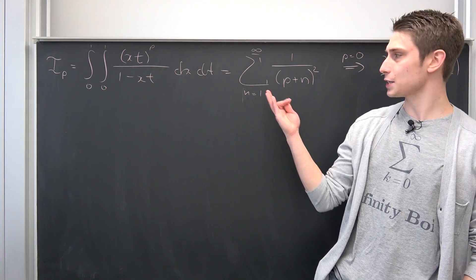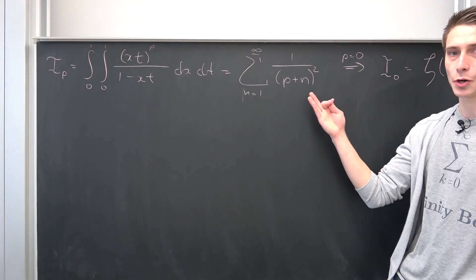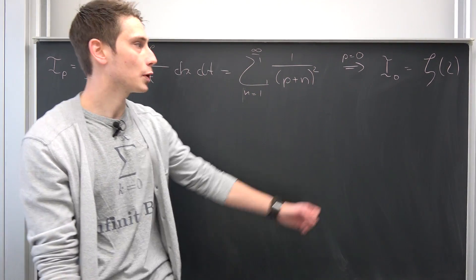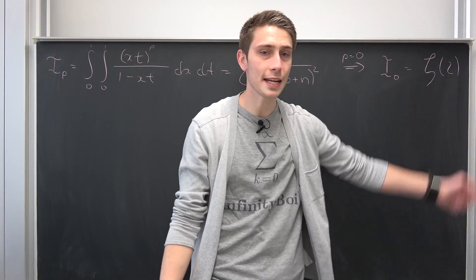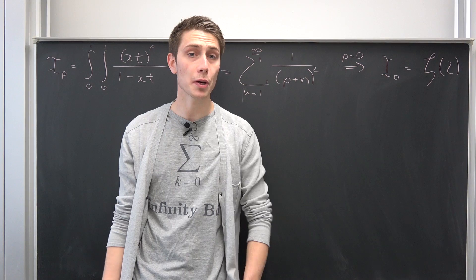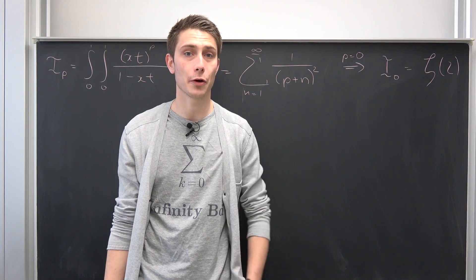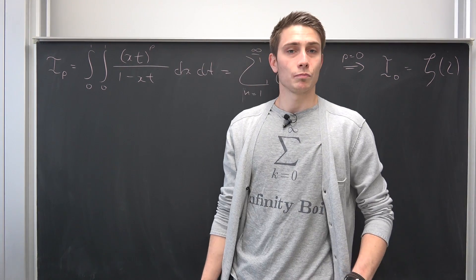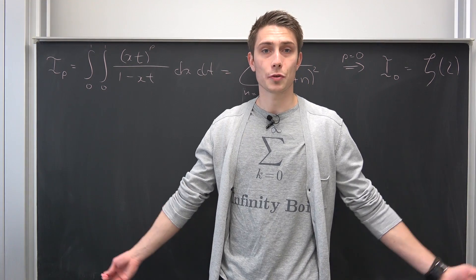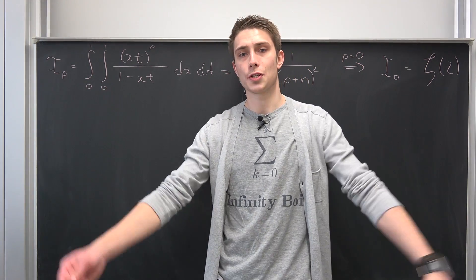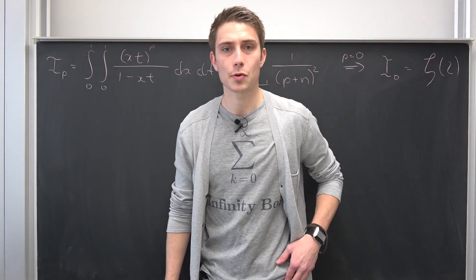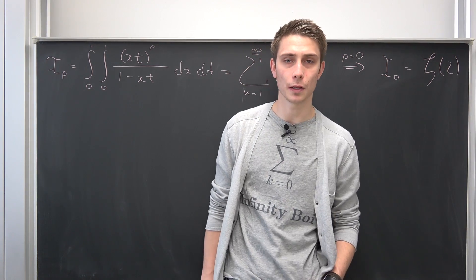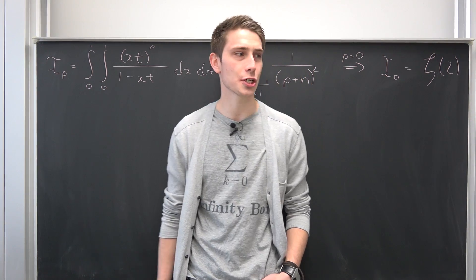Remember this huge expression from last time — when we let p be equal to zero, we get zeta of two. Our goal today is to find zeta of s, using Leibniz rule for integration, also known as Feynman integration — just for the clickbait, because people admire Feynman so much.